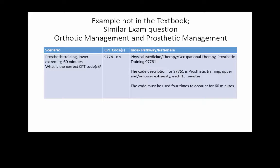Another example covers orthotic and prosthetic management. Prosthetic training, lower extremities, 60 minutes — the correct code is 97761. That code is each 15 minutes, so you use it four times to account for 60 minutes. Orthotics are things placed in shoes to align the body correctly; a prosthetic replaces an entire joint, like an arm or leg prosthesis. Rehabilitation hospitals do a lot of prosthetic management because patients come there following amputation of a limb.